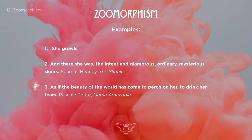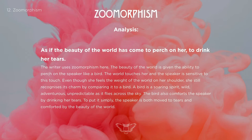Number three — my favorite: 'as if the beauty of the world has come to perch on her, to drink her tears.' That's by Pascale Petit from her poetry collection 'Mama Amazonia.' This is the one we'll unpack as an exam-style analysis. The beauty of the world is given the ability to perch on the speaker like a bird. The world touches her, and the speaker is sensitive to this touch. By comparing it to a bird — a soaring spirit, wild, adventurous, unpredictable as it flies across the sky.